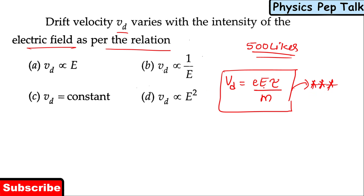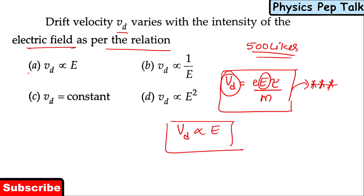This equation shows how electric field E is related to drift velocity. From this, I can say that drift velocity is directly proportional to the electric field. That is, option A is the correct answer for this question.